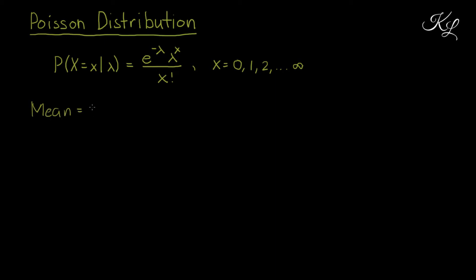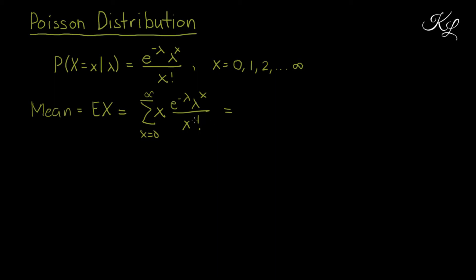The mean is equal to the expectation of X, and the expectation of X is equal to the summation of x times the probability mass function. Please take note that if x equals 0, this whole term is equal to 0, so what we're left with is x equals 1 to infinity.